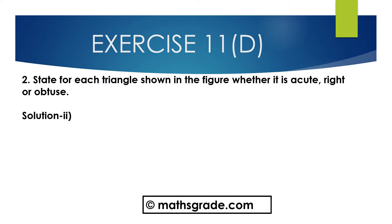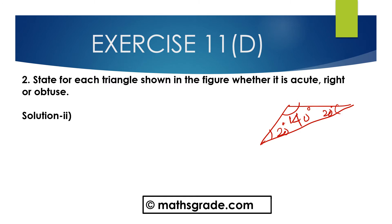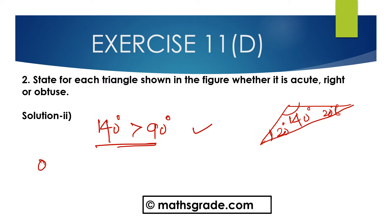Now the next part. State for each triangle — first draw the given triangle. This is 140 degrees, this one is 20 degrees, and this is 20 degrees. In this triangle, 20 degrees and 20 degrees are less than 90 degrees, and 140 degrees is more than 90 degrees. We know any triangle whose one angle is more than 90 degrees, that is an obtuse angle triangle. So here 140 degrees is more than 90 degrees, so this is an obtuse angle triangle.